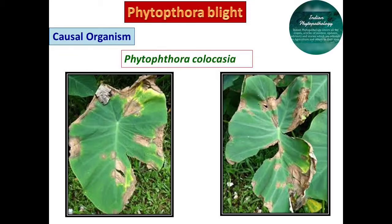You can see the symptoms of Colocasia Phytophthora blight. It shows small dark brown flakes or light brown spots on the upper leaf surface. You can easily identify this Phytophthora blight in Colocasia. These early spots often occur at the tips and margins of leaves where water accumulates.